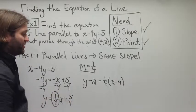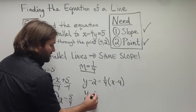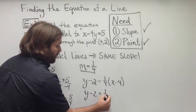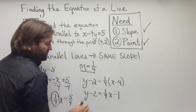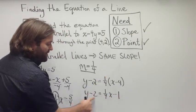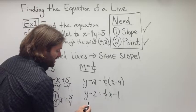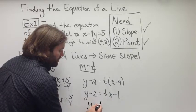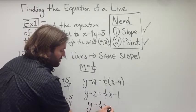Now we can put this in slope intercept form. y minus 2 is equal to 1 fourth x minus 1 by distributing the 1 fourth. And then adding 2 to both sides gives us y is equal to 1 fourth x plus 1.